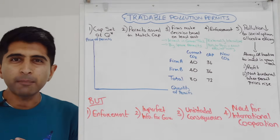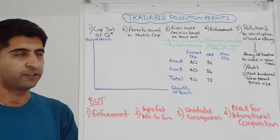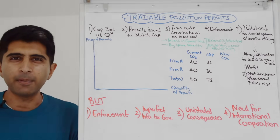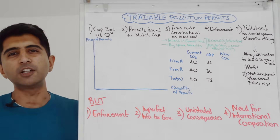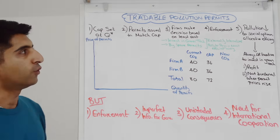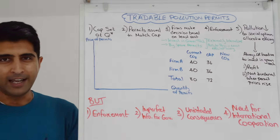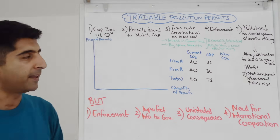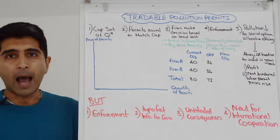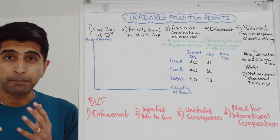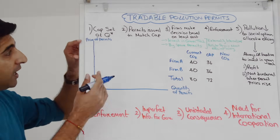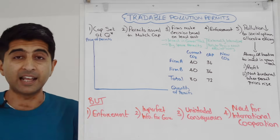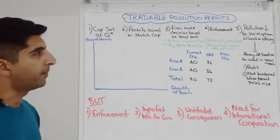Then the government issues permits to firms across the economy. Think of a permit as basically like a piece of paper equivalent to one ton of CO2, so permits are issued to firms across the economy to match the cap exactly. In that sense, a market for permits is created — you have the price of permits, the quantity of permits — this is basically the market for pollution.